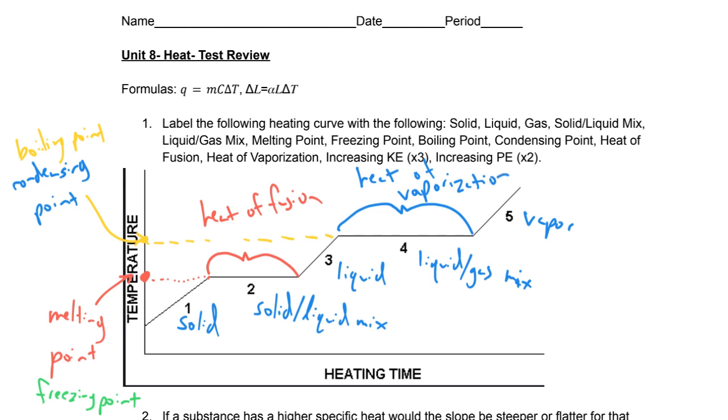Where is the kinetic energy increasing? I'm just going to write off to the side because it's getting kind of full. Kinetic energy is going up in sections one, three, and five, hence the increase in temperature. Potential energy is what's being increased when we change phase, and that's in sections two and four.